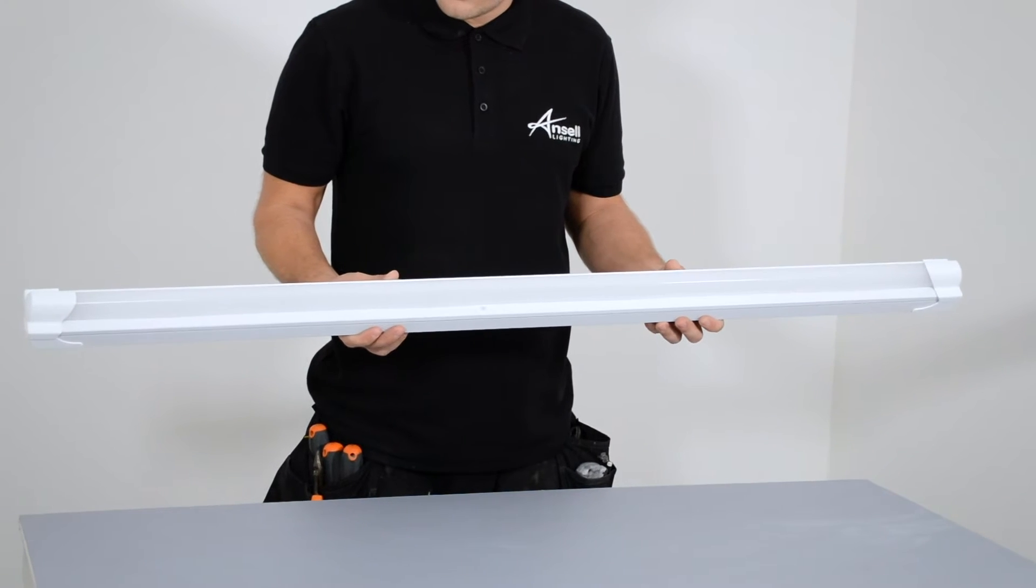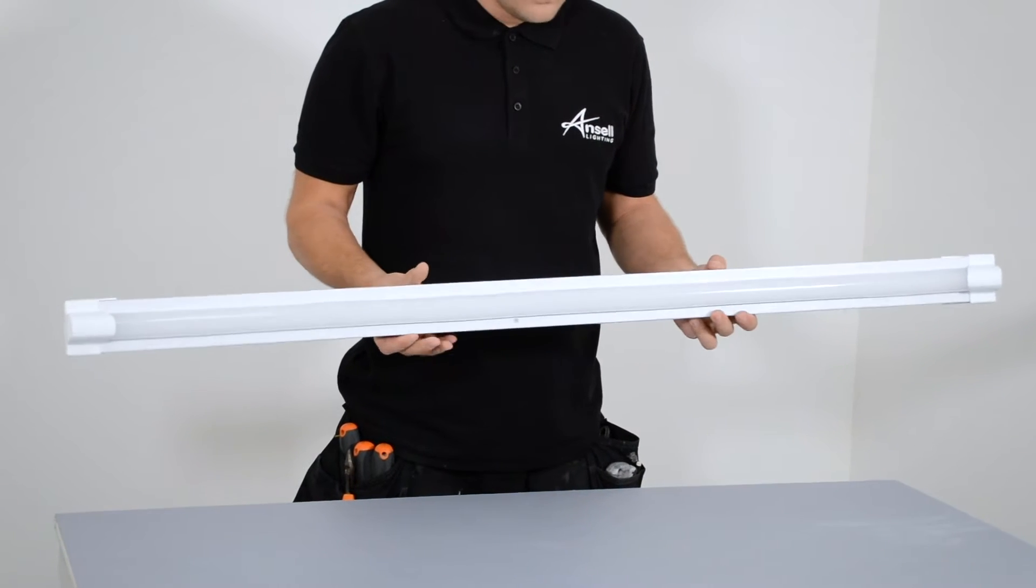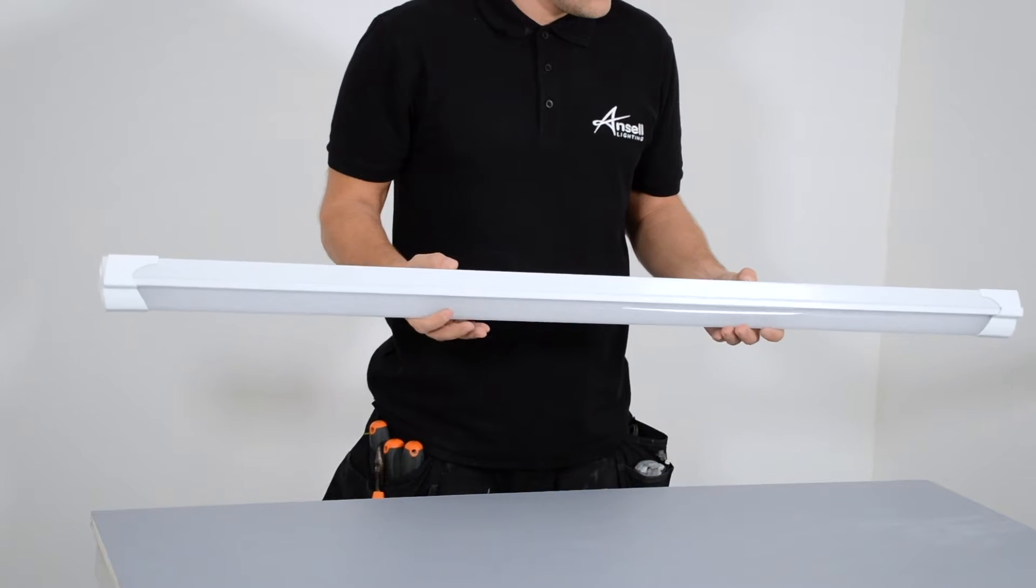This is Topline 6, Ansell Lighting's high-performance LED baton that is perfectly suited to a wide range of applications.